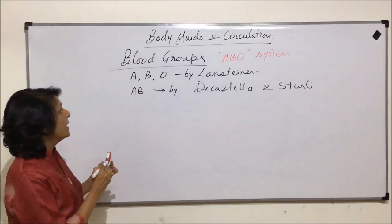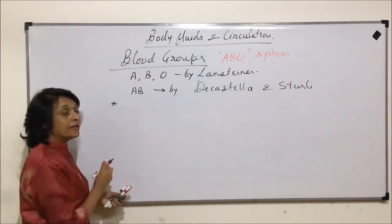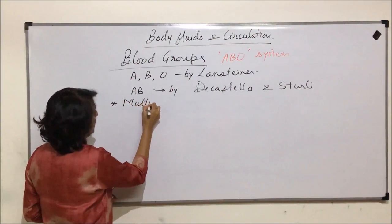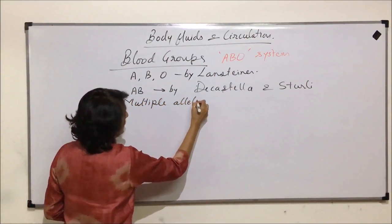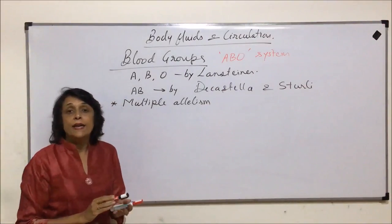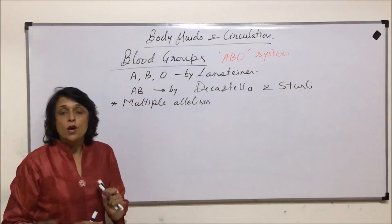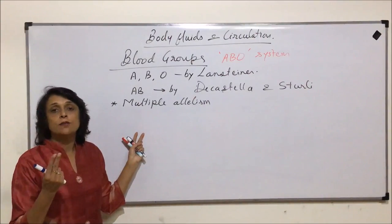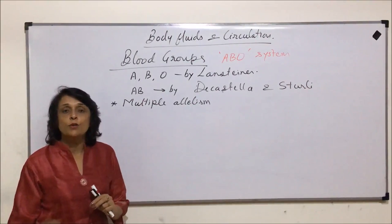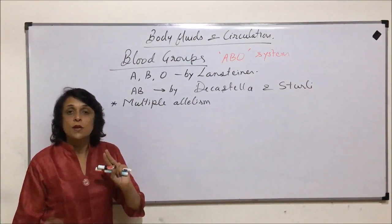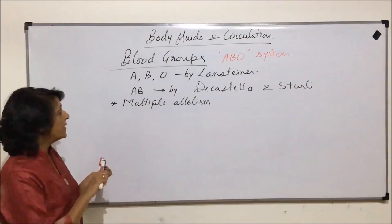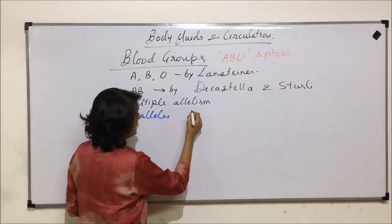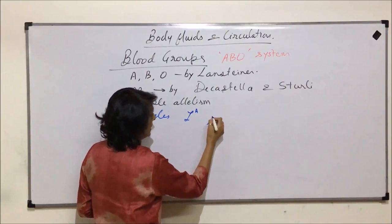Blood group is a type of inheritance known as multiple allelism. Multiple allelism means this trait is controlled by more than two alleles. In normal genetics, or the Mendelian laws, we talk of two alleles responsible for a particular trait — in other words, one gene has two forms which are known as alleles.